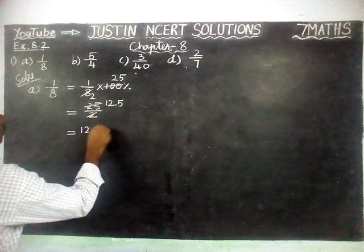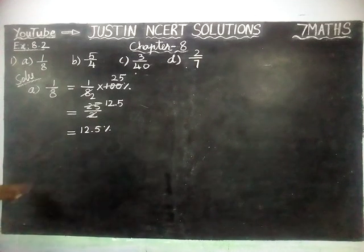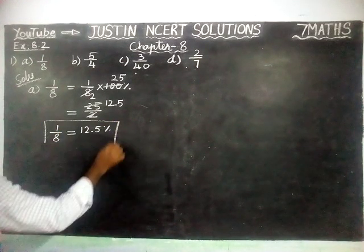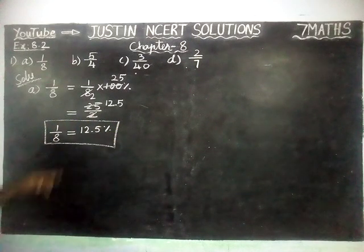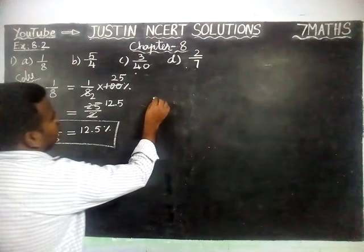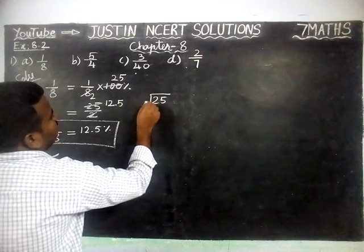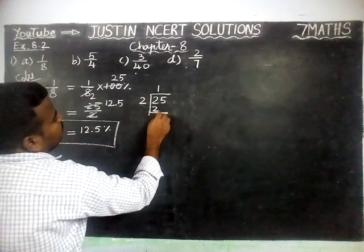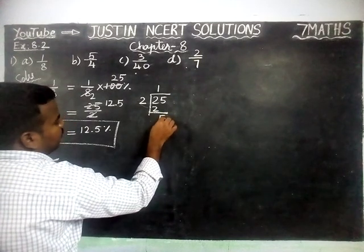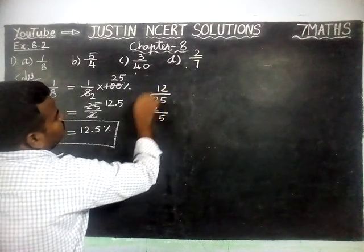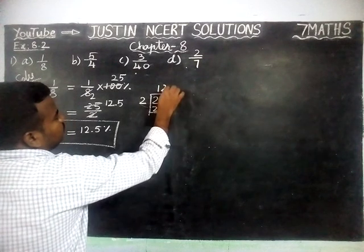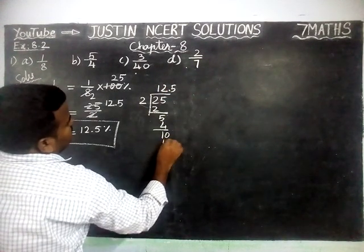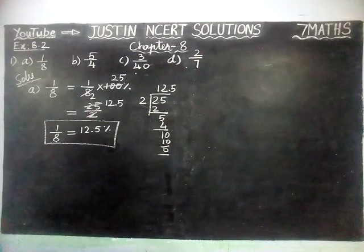So, 12.5 percent. Therefore, 1 by 8 is equal to 12.5 percent. If you want to verify that division, 25 divided by 2: 1 two is 2 remaining, taking 5, 2 twos are 4 remaining 1. We cannot divide, so we make a decimal point. Now 10, and 5 twos are 10, remaining 0.